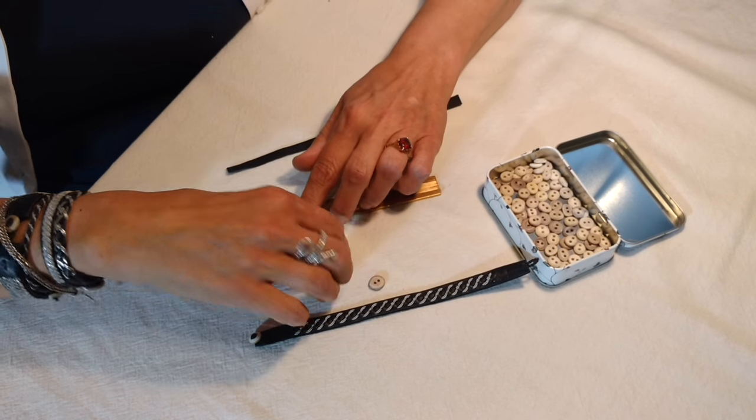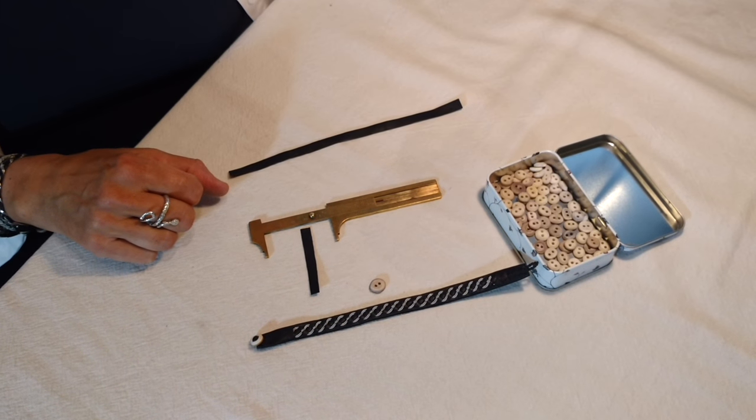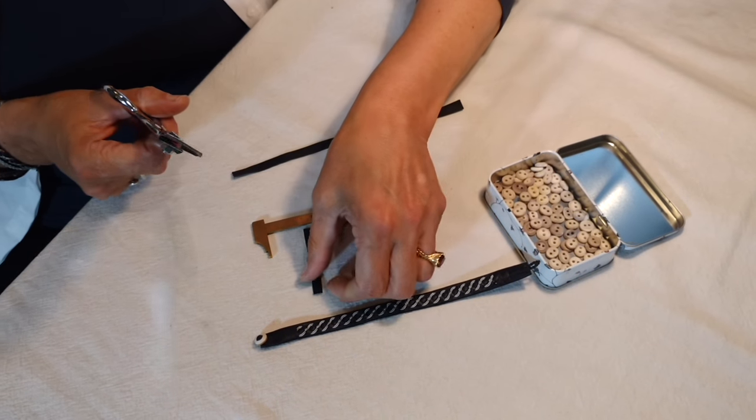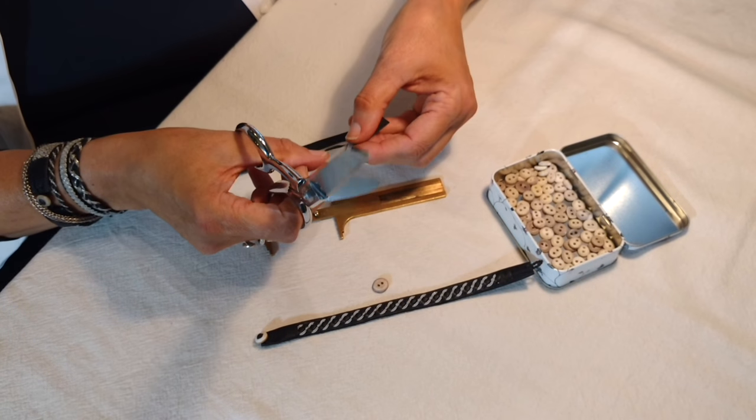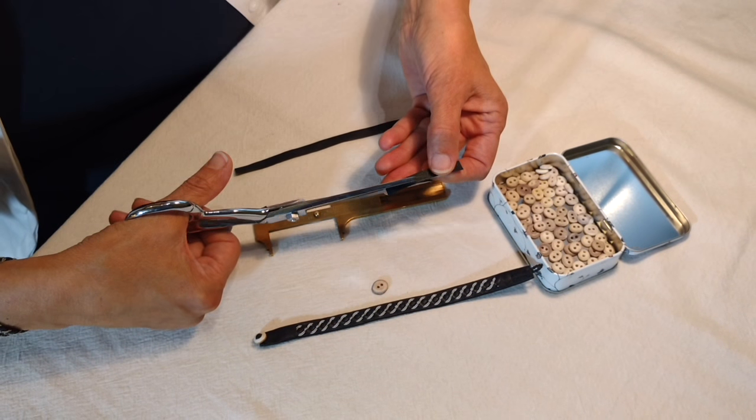A quarter inch measurement wide is a good start. Taking a very sharp scissors, you're going to cut from one corner of your strip down at an angle to create a leather needle.